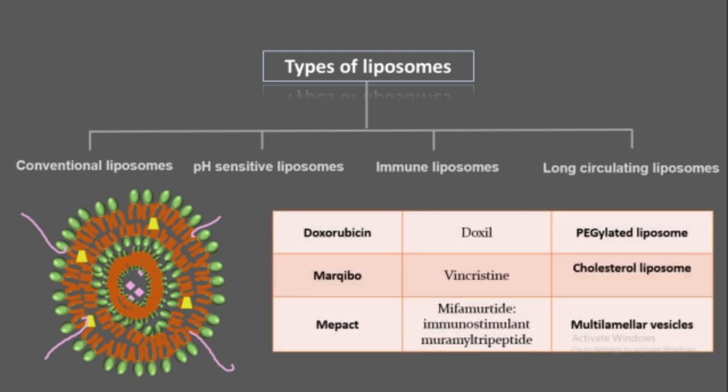Some drugs formulated and administered in clinical use include doxorubicin, administered in the form of a PEGylated liposome, and vincristine, also given as a cholesterol liposome. Many more drugs and antifungals have been administered in liposomal formulation to overcome adverse effects or reduce the toxic effects seen in the free form of the drugs.